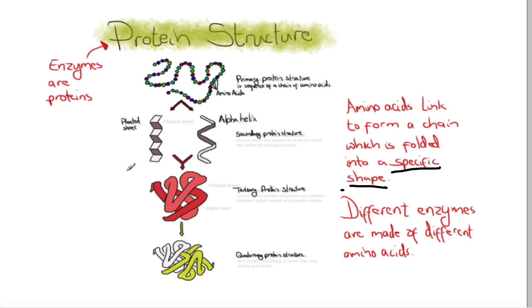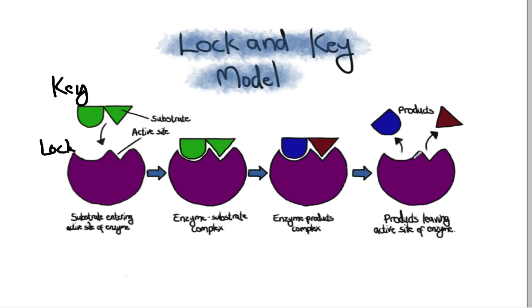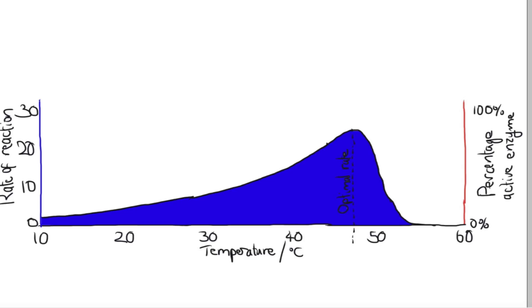And if they get disrupted the shape will change, and if the shape changes then the substrate can no longer fit in. At that point we say it has denatured - that's the posh term to describe what happens there. So at that point there's no point trying to get a reaction to go any quicker than this because you're just killing off your enzymes, you're messing up the active site and it's no longer going to happen.